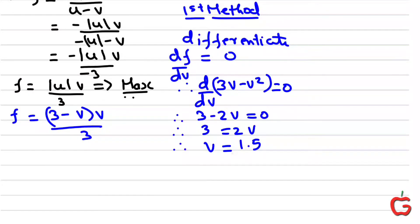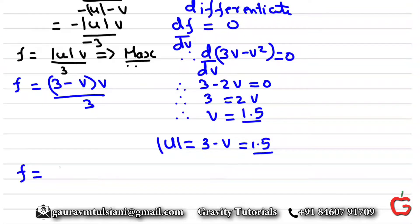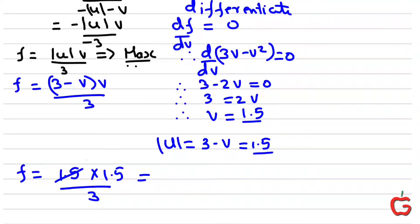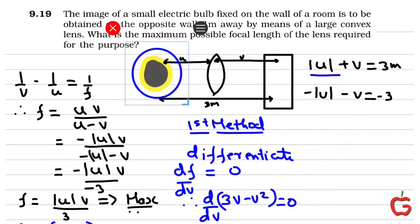Since V is 1.5, the magnitude of U is 3 minus V, which is also 1.5. So the object distance and image distance are both 1.5 meters. The focal length F is 1.5 times 1.5 divided by 3, which comes out to be 0.75 meters or 75 centimeters. So the maximum focal length for the image of the light bulb to be focused on the screen is 75 centimeters. This is the first method — the differentiation method.